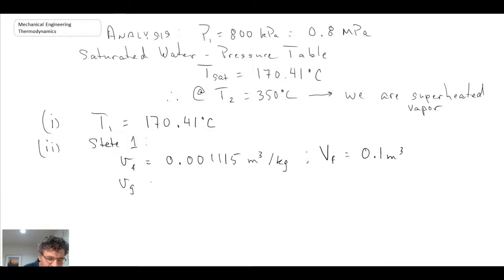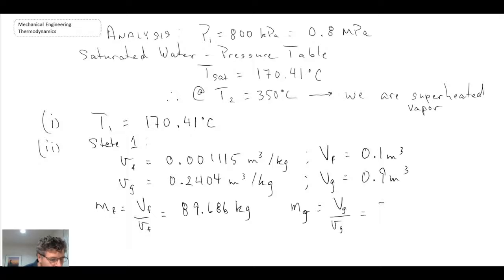And we also know the total volume of the liquid. It was 0.1 meters cubed. And we know of the vapor phase, the specific volume, and we also know that from the problem statement itself is 0.9 meters cubed. Therefore, we can determine the mass of the liquid.